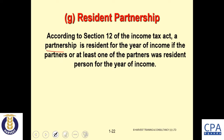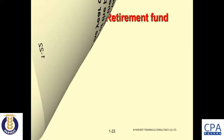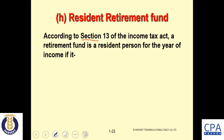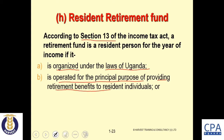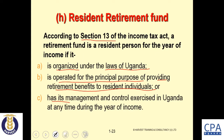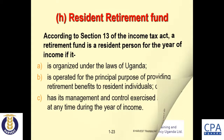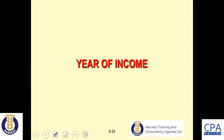According to Section 12, a partnership is resident for the year of income if at least one of the partners was resident during that year of income — important since taxation of partnerships is now in the syllabus. According to Section 13, a resident retirement fund is resident if: (1) it is organized under the laws of Uganda; (2) it is operated with the principal purpose of providing retirement benefits for resident individuals; and (3) its management and control is situated in Uganda at any time during the year of income.